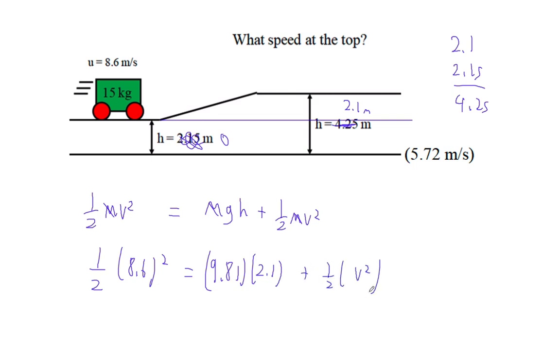And this solves to the same exact thing. So 0.5 times 8.6 squared minus 9.81 times 2.1.